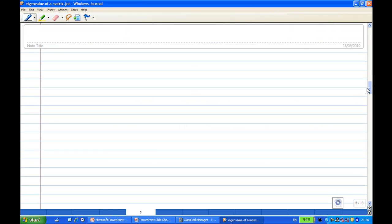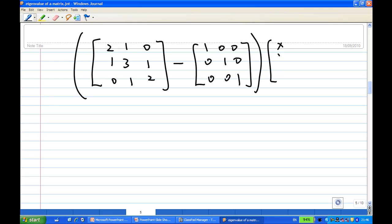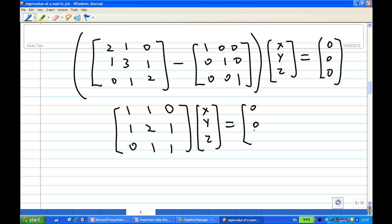Identity times [x,y,z]. Therefore, you can rewrite them as [2,1,0; 1,3,1; 0,1,2] minus the identity times [x,y,z] equal to [0,0,0].